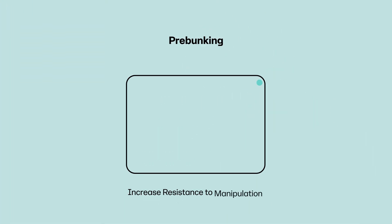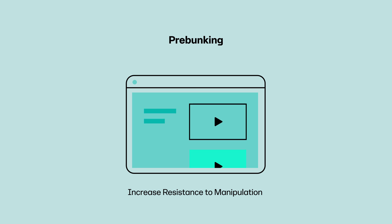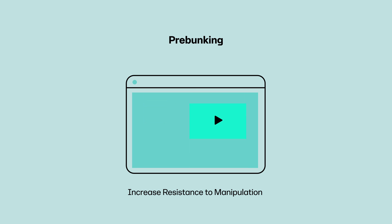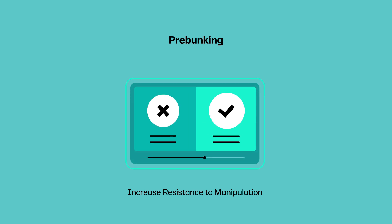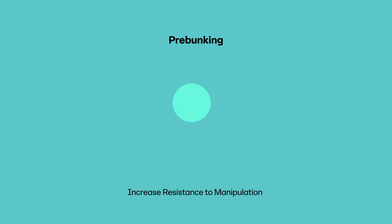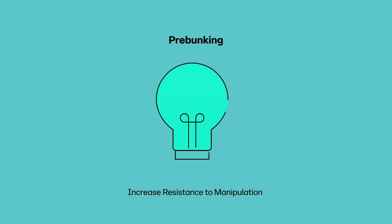Pre-bunking is a technique to preempt manipulation attempts online. By forewarning people and equipping them to spot and refute misleading arguments, they gain resilience to being misled in the future.